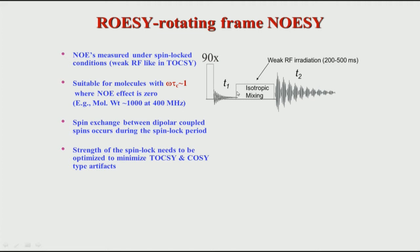The intensity at any point is modulated — connected or related to the chemical shift frequency value — and that intensity is transferred to the next spin because of the spin lock, which operates through the through-space interaction. After that interaction, the second spin, which has received the magnetization from the first spin, starts moving — and that gives the second spin's chemical shift. So the two spins are correlated to each other in this manner.